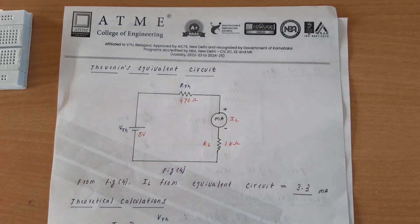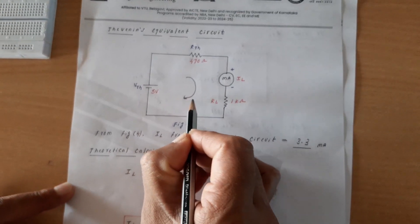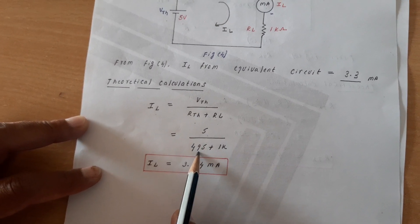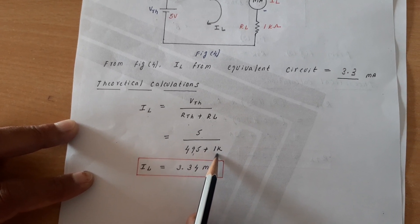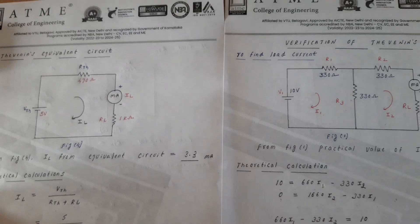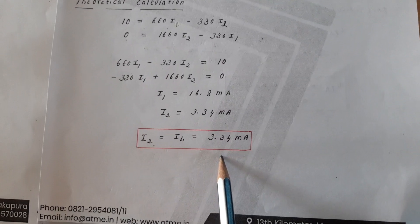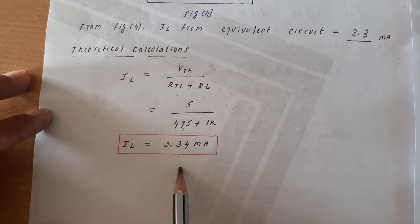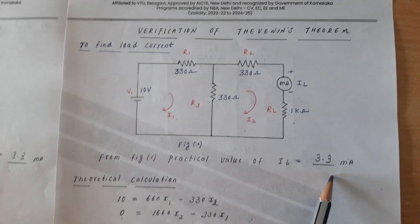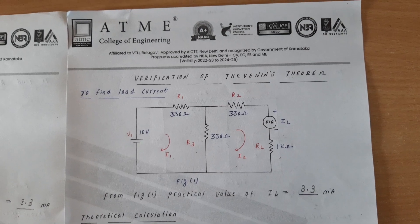Let us check this answer theoretically. IL = VTH / (RTH + RL) = 5 / (495 + 1000) = 3.34 milli amperes, which equals what we calculated earlier. So theoretically 3.34 mA and practically 3.3 mA for both the equivalent circuit and the actual circuit. This is how we can prove Thevenin's theorem both theoretically and practically. Thank you from ATME College of Engineering.